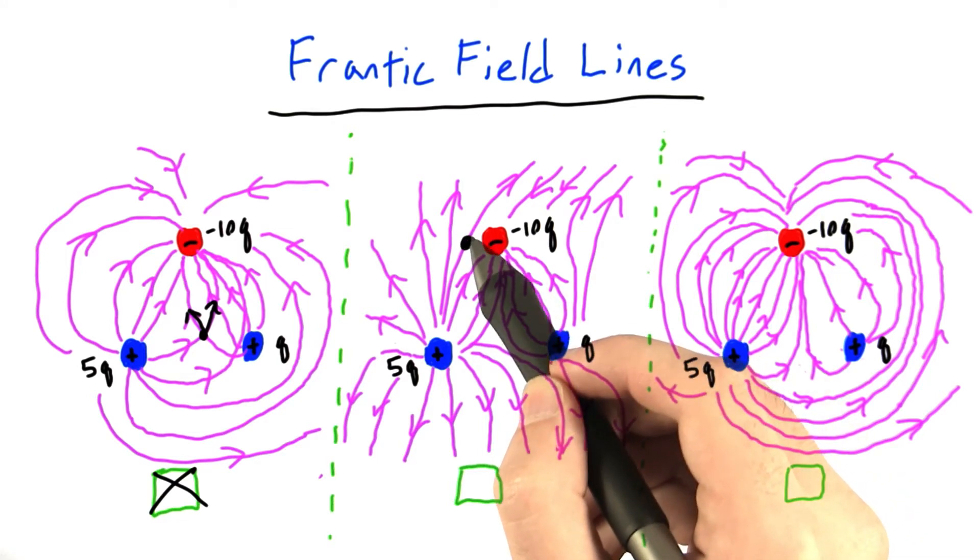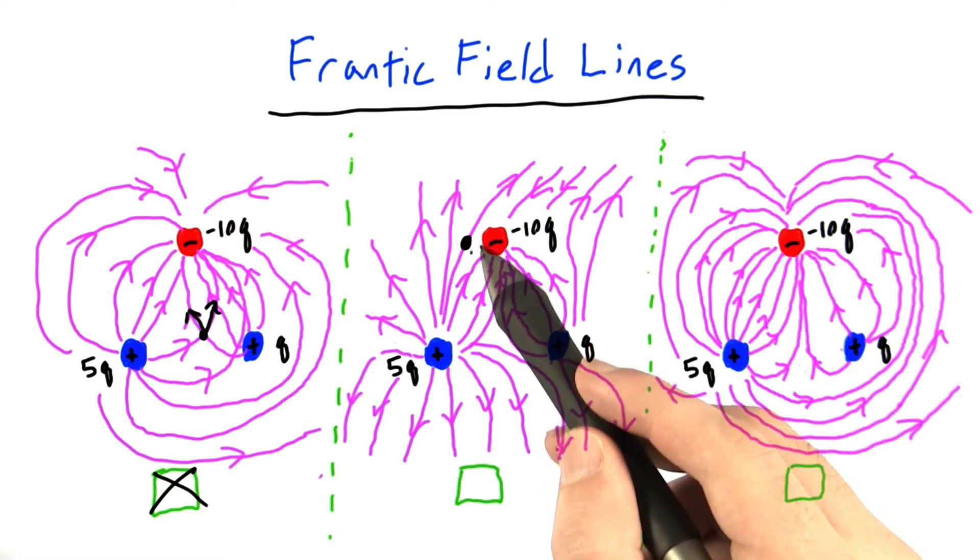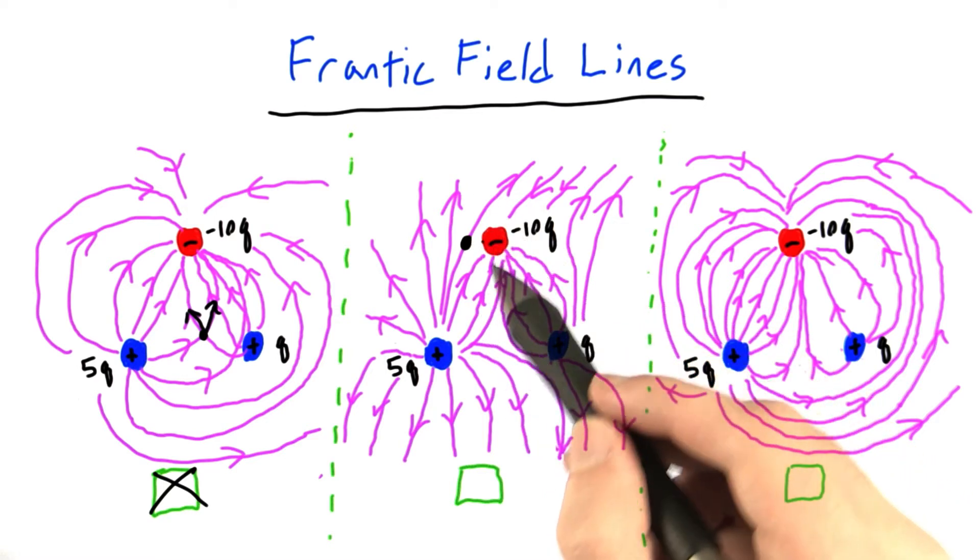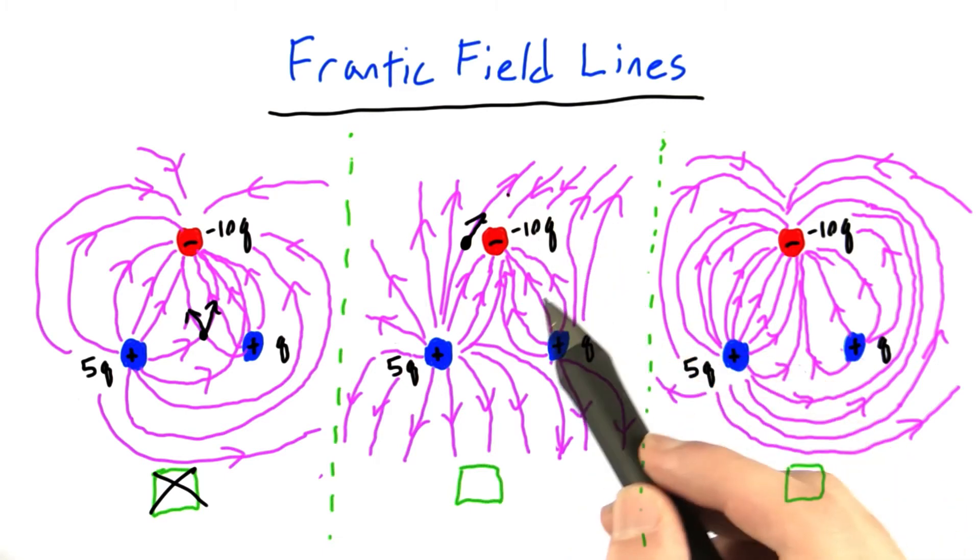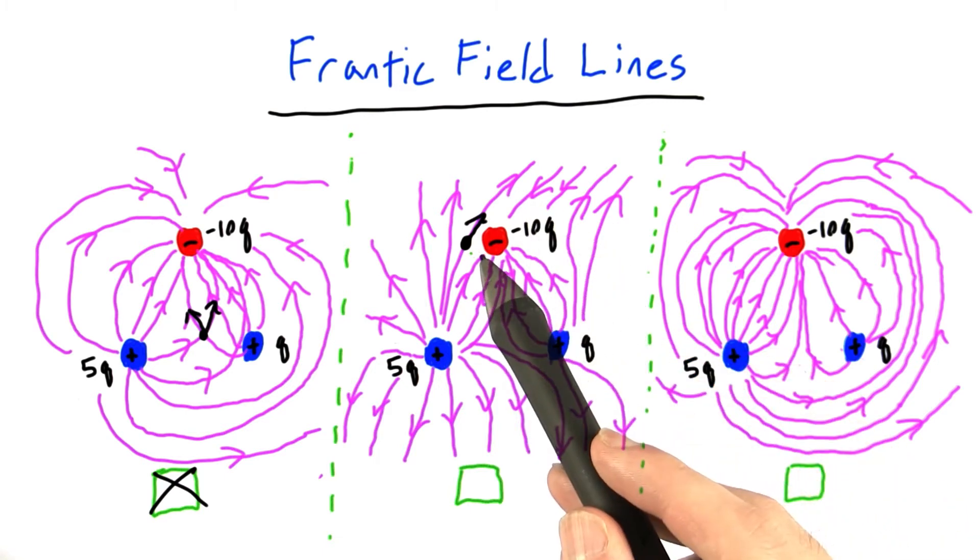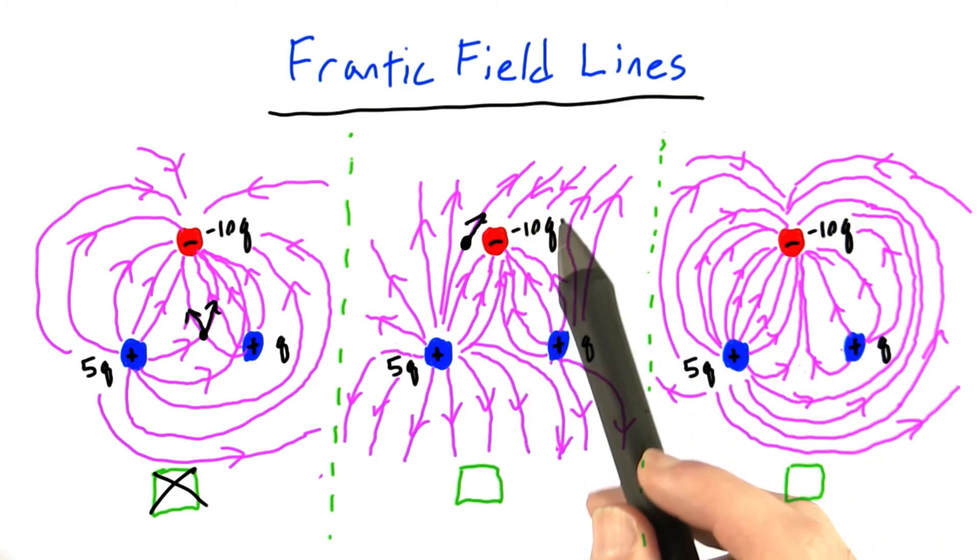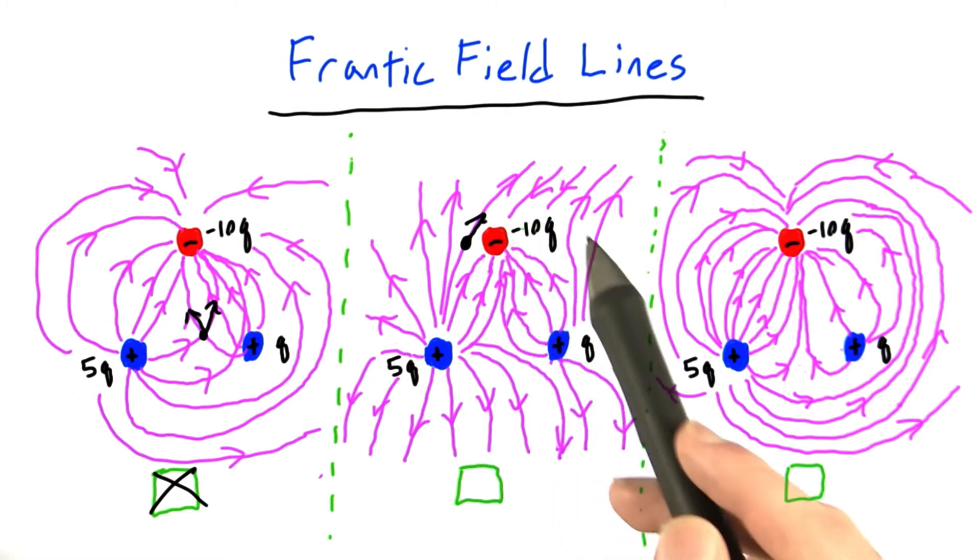imagine a particle right here. So if we imagine this particle has a positive charge, the field lines say that this particle should be pushed in this direction by the electric field. Well, that doesn't seem right. This positive charge would be right next to this giant negative charge, which should really pull it in.